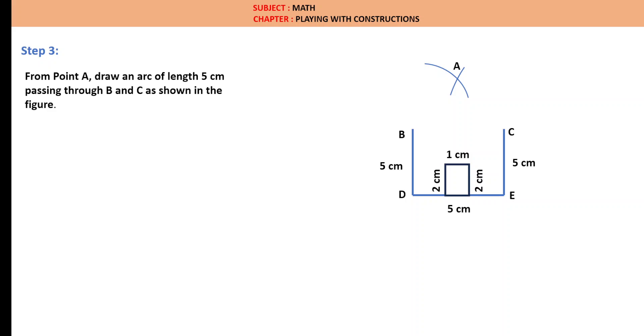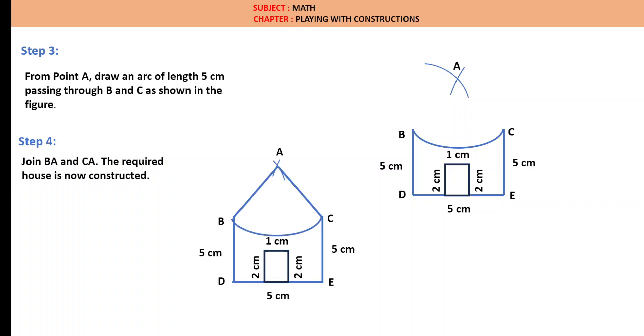Step 3: From point A, let us draw an arc of 5 cm passing through point B and C. The required house is now constructed. If we observe here, AB is 5 cm and AC is also 5 cm. This is ABDEC, the required house with a door of 2 cm high and 1 cm width.